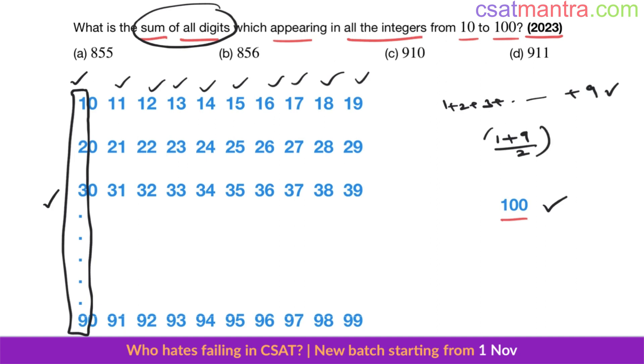So this is 10 by 2, that is 5, 5 into 9 is 45. Now how many such columns are there? 10. 45 into 10 is 450.